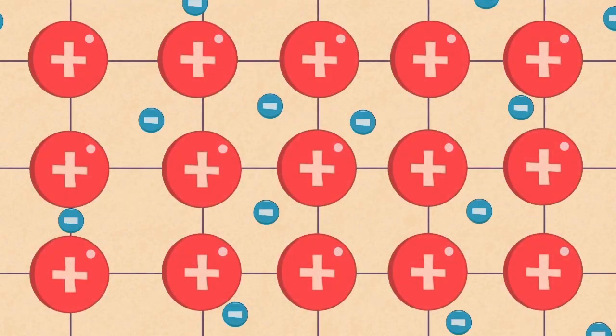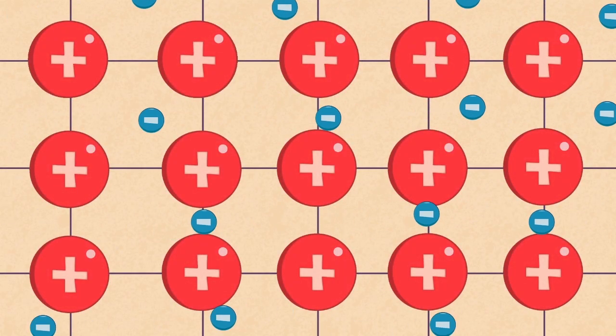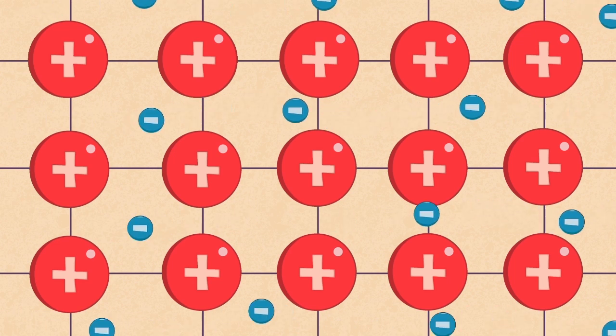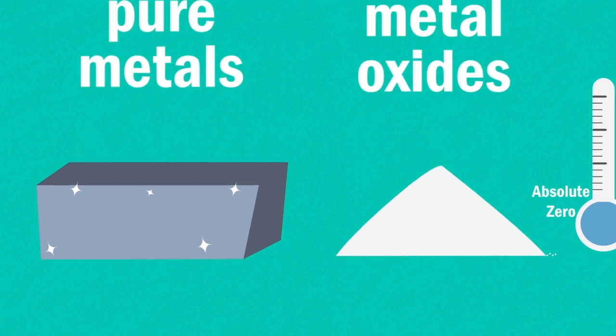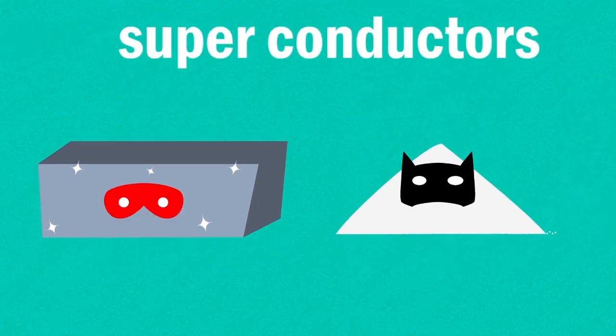Some materials offer hardly any electrical resistance to the flow of current or the movement of these electrons. These include some pure metals and metal oxides cooled to a few degrees above absolute zero. These are special conductors called superconductors.